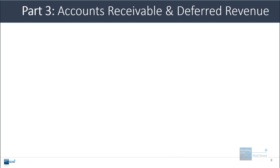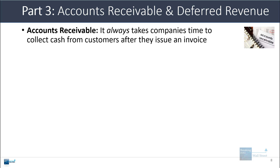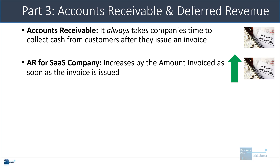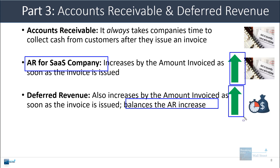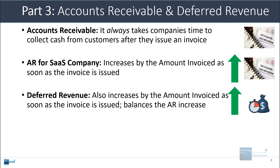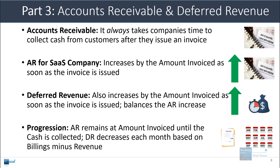Now let's go to accounts receivable and deferred revenue — this is where the error actually occurred last time. Accounts receivable for a SaaS company increases by the amount invoiced as soon as the invoice is issued. At the same time, deferred revenue also increases by that same amount invoiced, balancing the AR increase: AR on the asset side goes up, and deferred revenue on the liabilities side goes up. AR remains constant at the amount invoiced until cash is actually collected, at which point it goes to zero. Deferred revenue then decreases each month by the difference between billings and revenue.